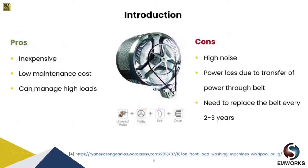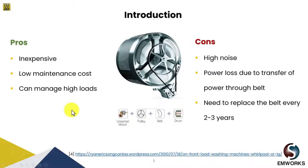Now let us look at the belt-driven system's pros and cons. It consists of a universal motor with pulley and belt connected to the drum to rotate it. First, it is inexpensive because we don't use a high-technology motor system here — it's a universal motor which is simply connected and the size of the motor is not very big. It has low cost maintenance and can also manage high loads.